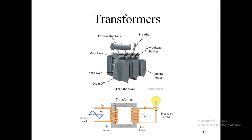We also have the auto transformer, which is used when the voltage ratio between input and output is close to one — that is, when we do not need to change the voltage by a large amount. The auto transformer has several advantages over the two-winding transformer, including copper savings and lower losses.